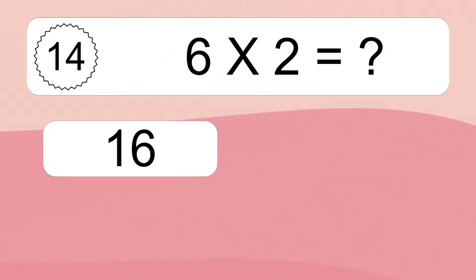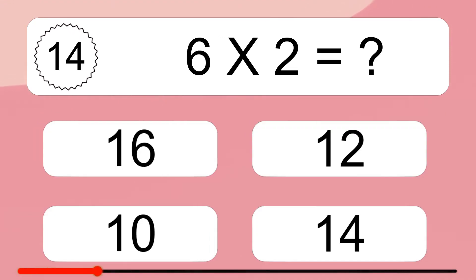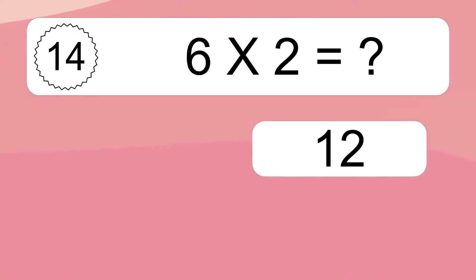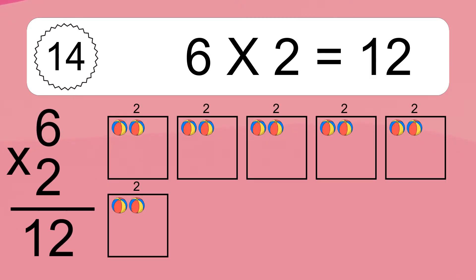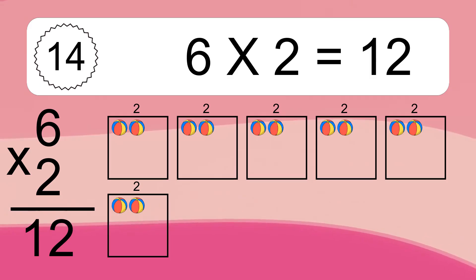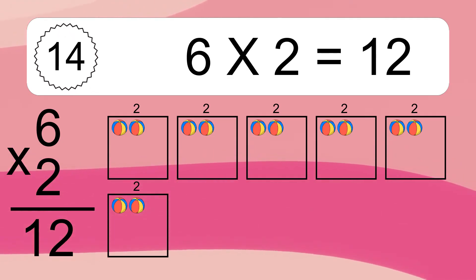6 times 2 equals what? 6 times 2 equals 12. We have 6 boxes, and each box has 2 colorful balls inside. If you count all the balls in all the boxes together, you will have 6 times 2 balls. This equals 12 balls.